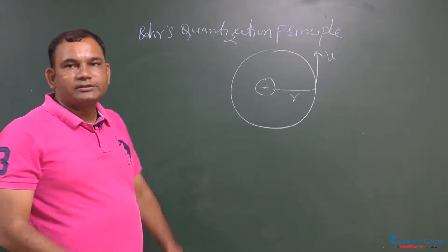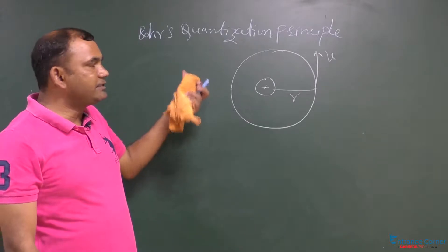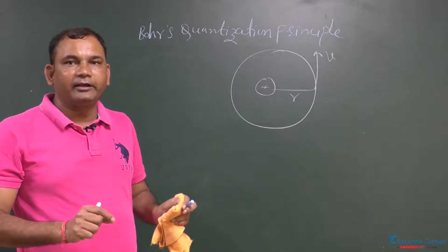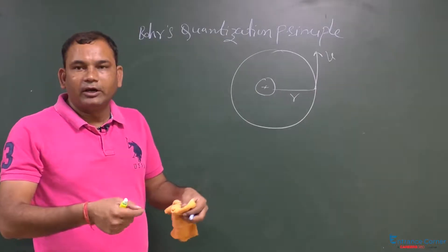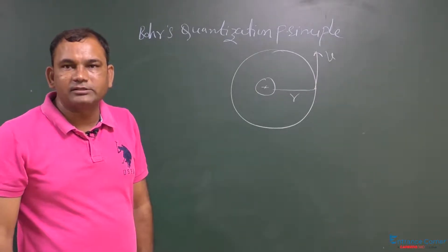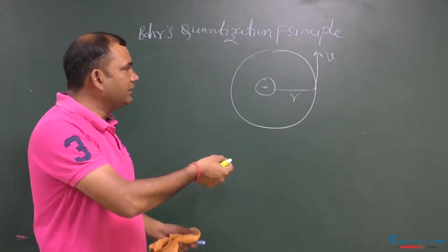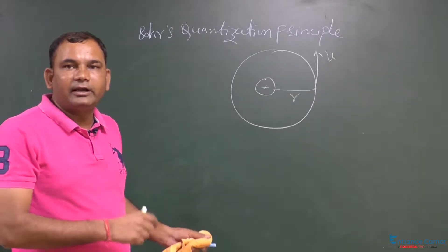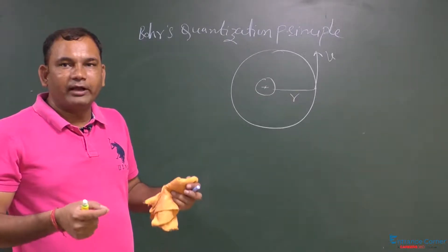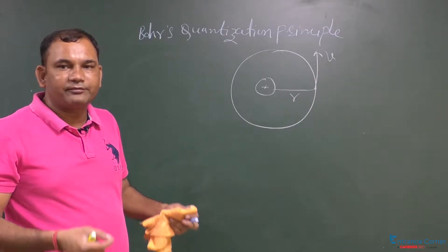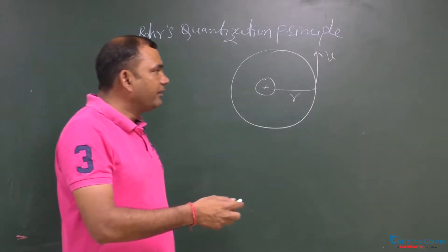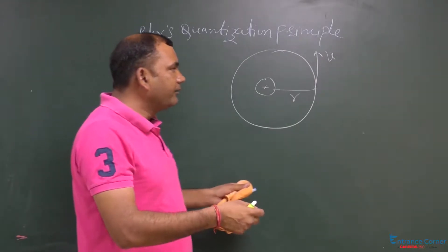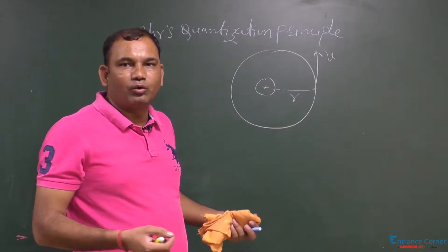Now, what Bohr says is that the angular momentum of the electron which revolves around the nucleus is an integral multiple of h upon 2π, where h upon 2π is a fixed quantity and it is always an integral multiple of any number like 0, 1, 2.